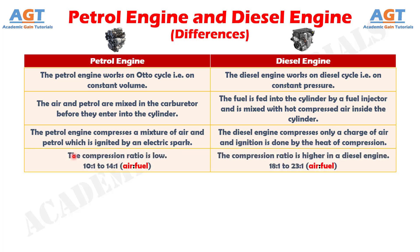Number 4: in a petrol engine, the compression ratio is low. Here, the air-to-fuel ratio ranges from 10:1 to 14:1, whereas in a diesel engine, the compression ratio is higher. Here, the air-to-fuel ratio ranges from 18:1 to 23:1.